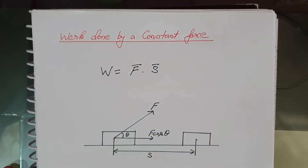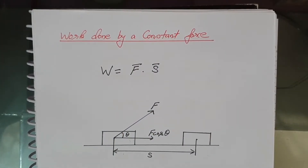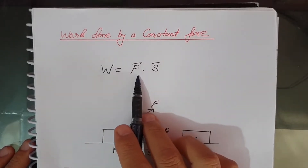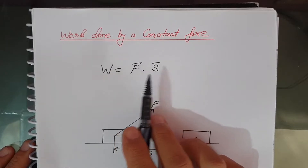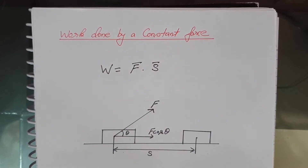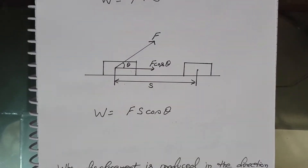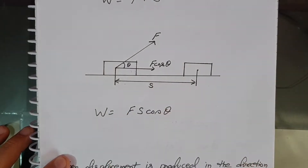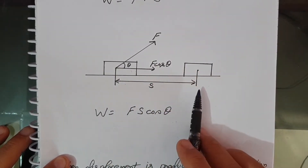Work done by a constant force: when a constant force F acting on a body produces a displacement S in the body, then the work done by the force W is the dot product of the force and displacement, given as W = F · S. Now, considering that displacement and force are not in the same direction and they are making an angle theta — this angle theta is basically the angle between the force and the displacement.